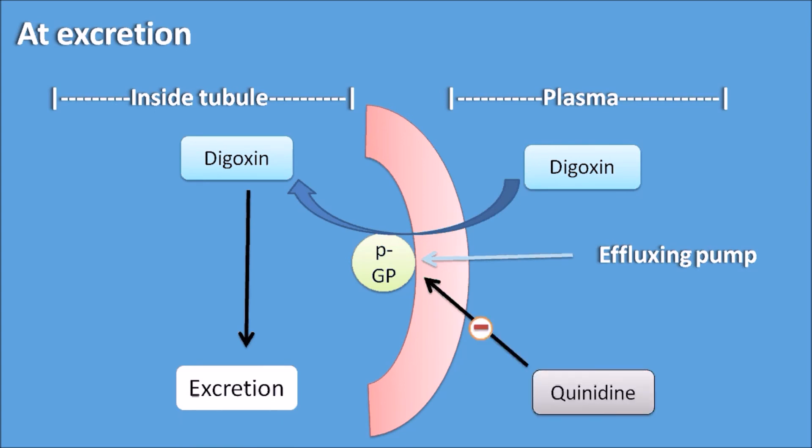Now drugs like quinidine can block this P-glycoprotein, thereby inhibit the secretion of digoxin from the plasma into the renal tubule. So this increases the free concentration of digoxin levels in the plasma, which may lead to digoxin toxicity.